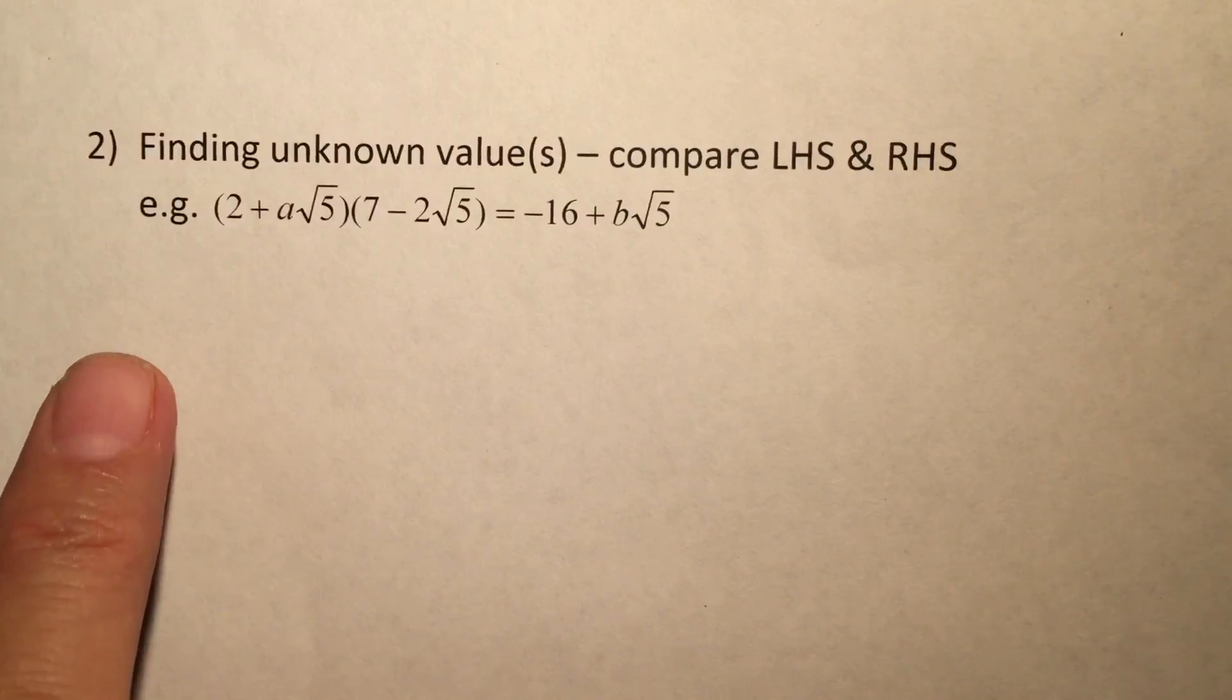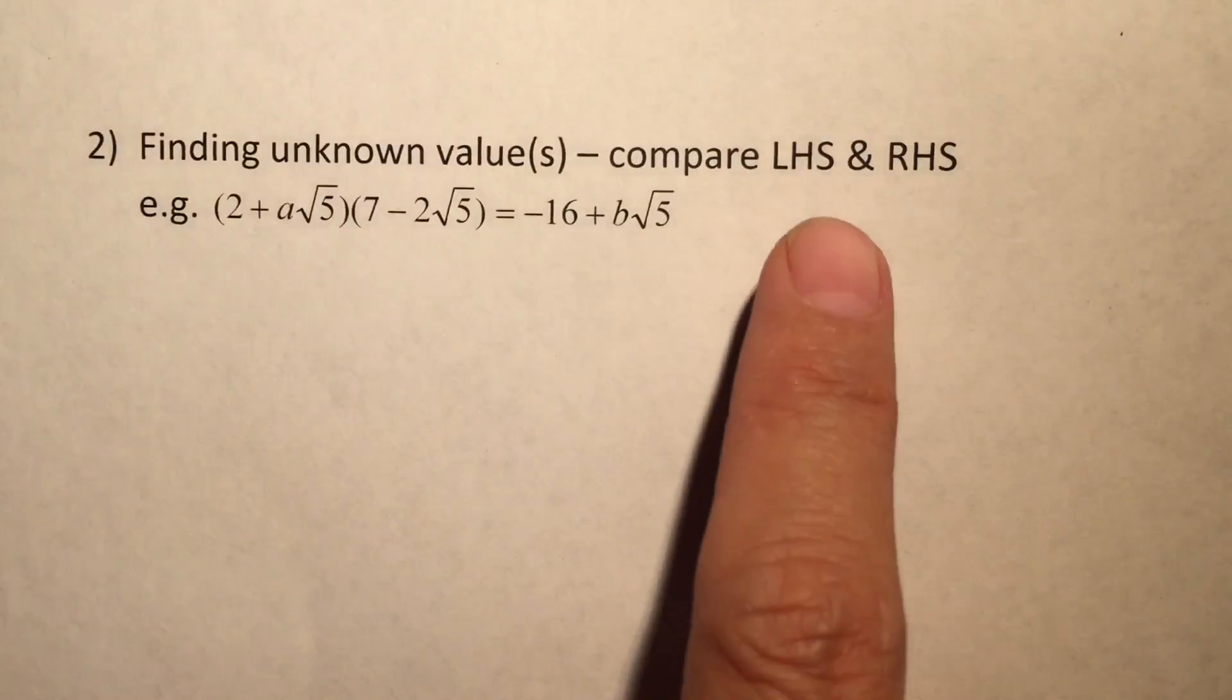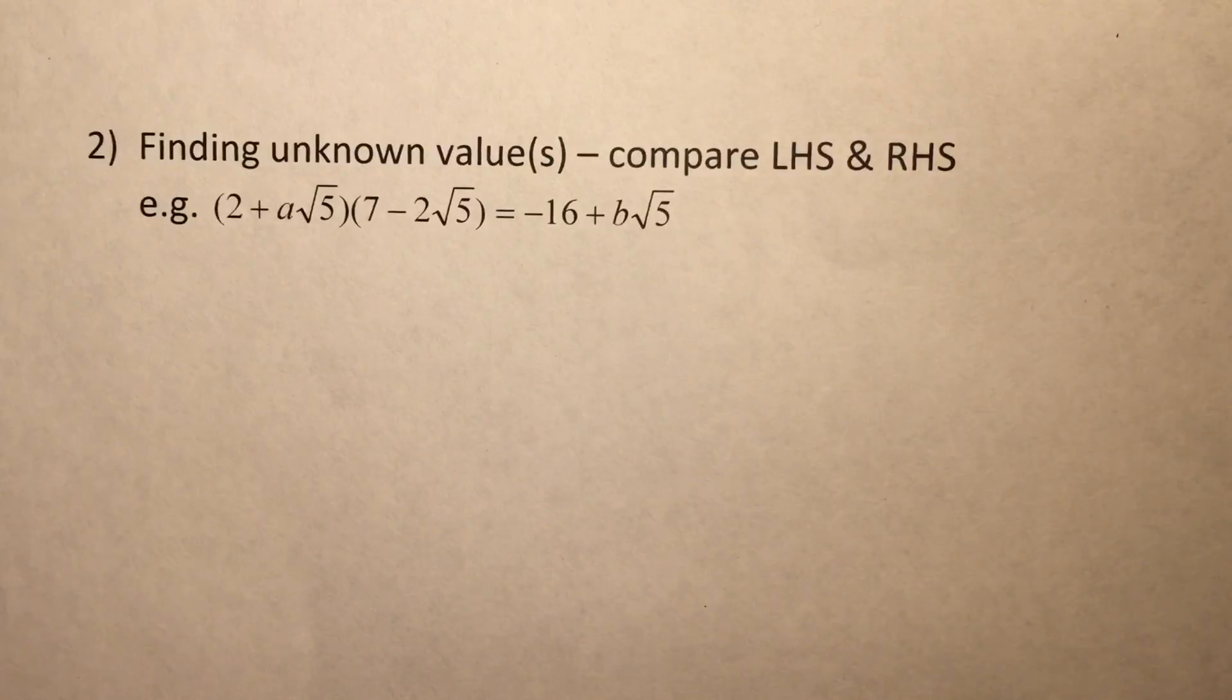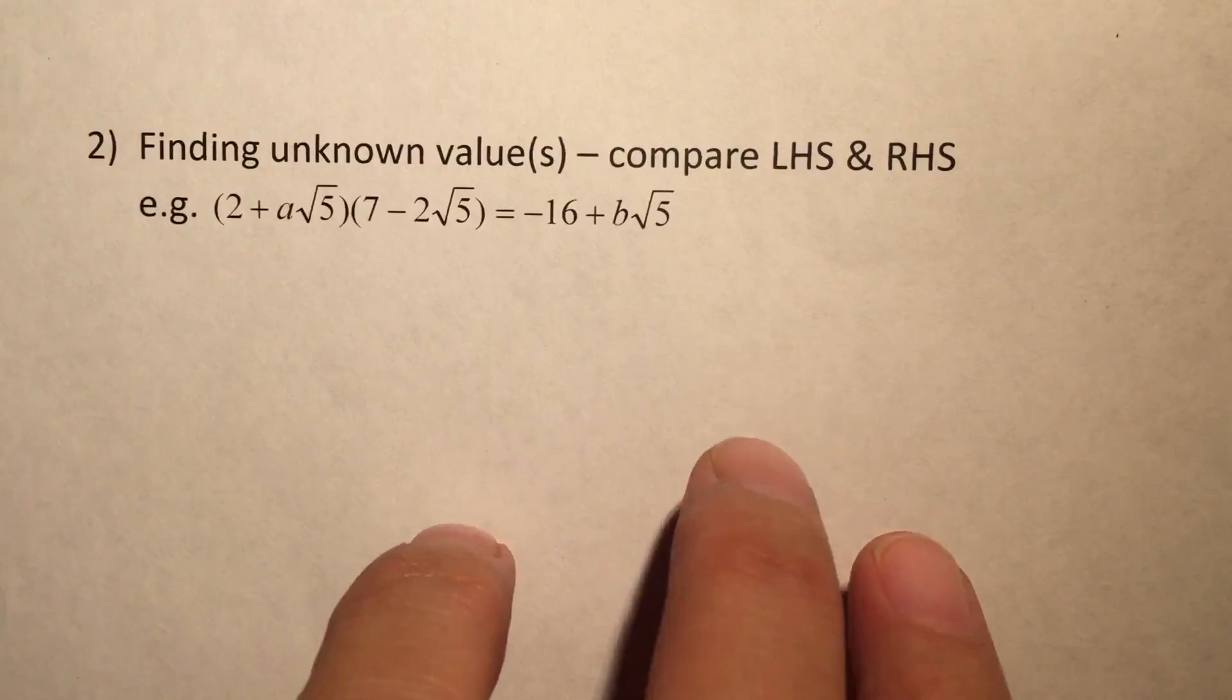And in this case here, the strategy we are going to use is that we are going to compare the left-hand side and the right-hand side. We are going to compare the rational term, which is the non-surd term, and the irrational term, which is the surd term.